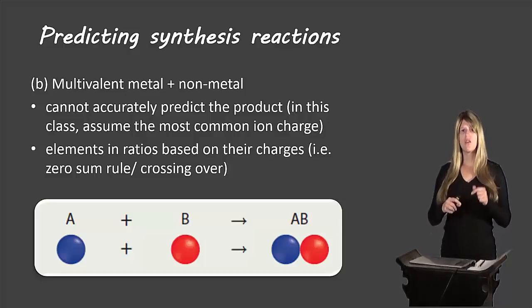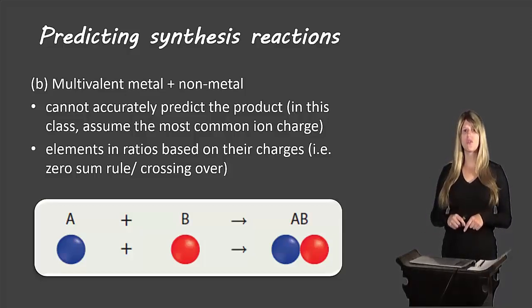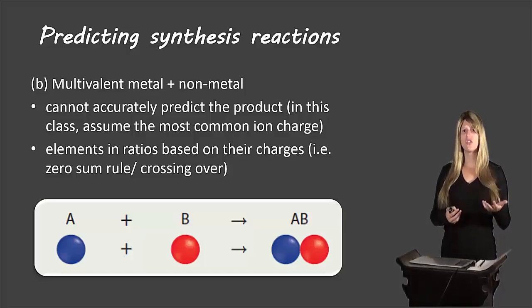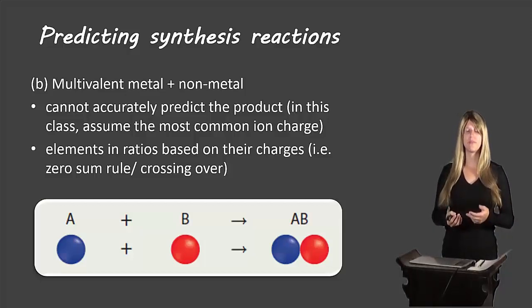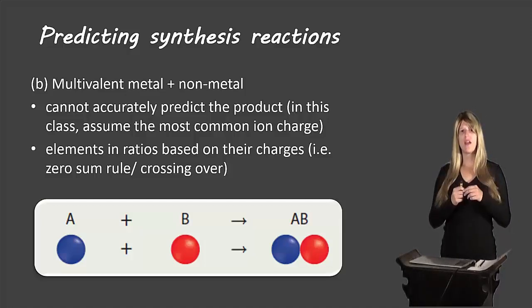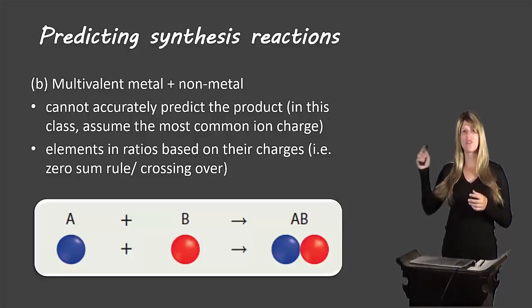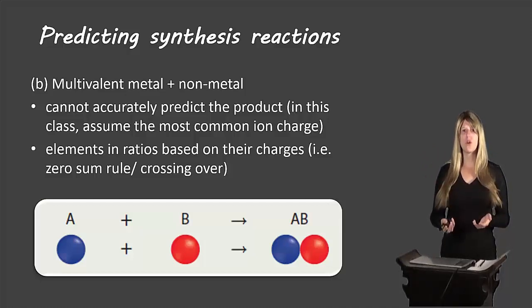For this course, we're always going to assume the most common ion is used. For example, iron could be iron 2+ or iron 3+; iron 2+ is the more common ion, so we always assume the product uses iron 2+. To identify the most common ion, look at the periodic table — the ionic charge listed at the top, or listed first if written horizontally, is always the most common.